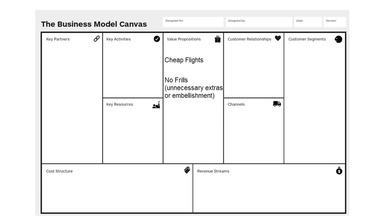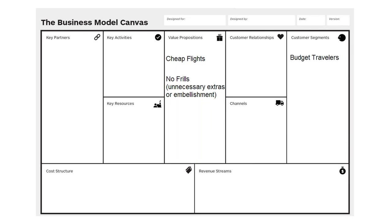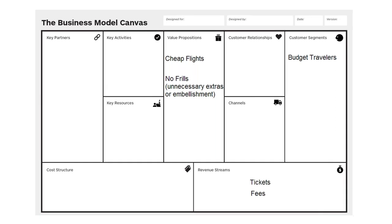No frills means no unnecessary extras — no offering you lunch, dinner, sodas, or extra baggage space. These things raise the cost of buying a ticket. There's a particular segment of customers — the budget travelers — who are not interested in more space, having dinner on the flight, or free drinks. So for Cheapo Airlines, the value proposition is cheap flights with no unnecessary extras or embellishment, and that really helps them drive down their costs so they can offer cheap tickets to their budget travelers.